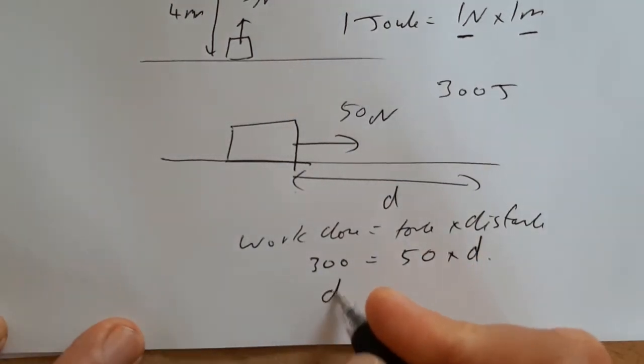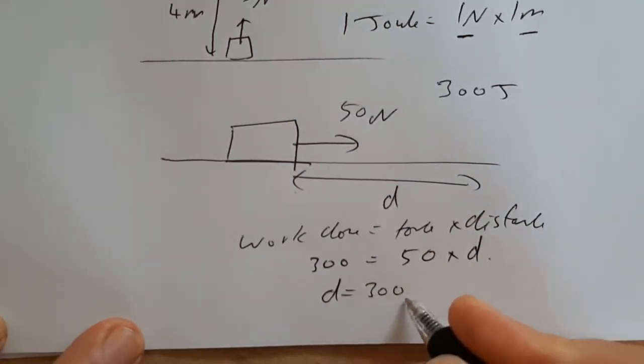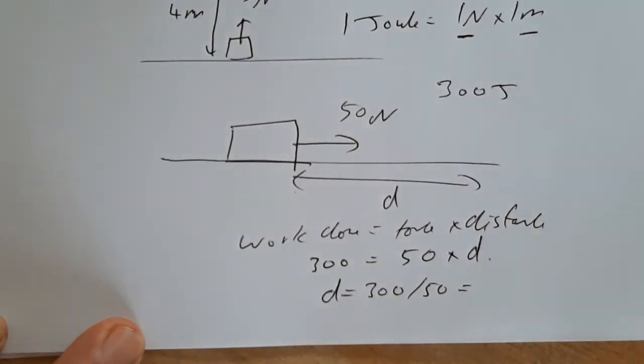Right. So rearranging D equals 300 divided by 50. 300 divided by 50, what you can cancel is 6 meters. We could drag the block 6 meters. Hope you found that useful. And you can have a go now at some of the questions on the worksheet.